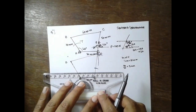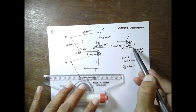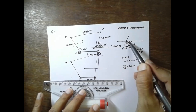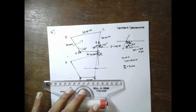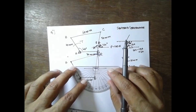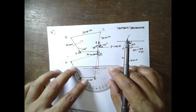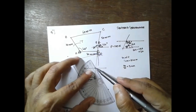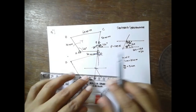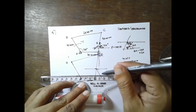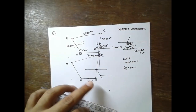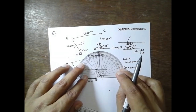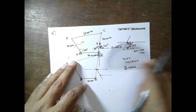I will draw a line here. If this is 120, this angle will be 60. Then mathematically, if this is 60, then this angle is 60. I will draw 60 degrees here — exactly parallel to this one. If I measure this angle, this angle will be 120.